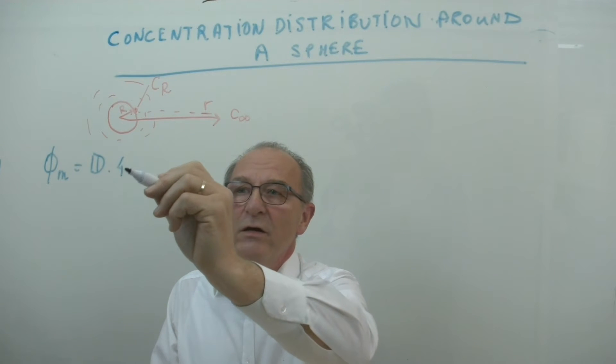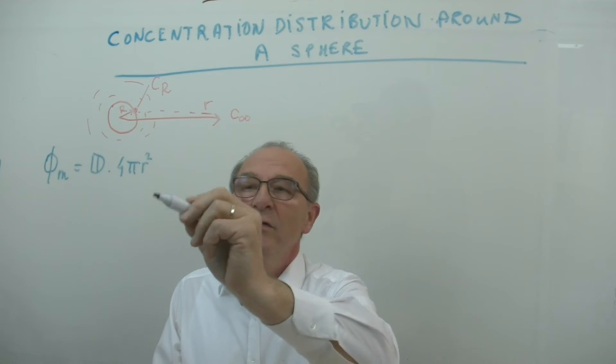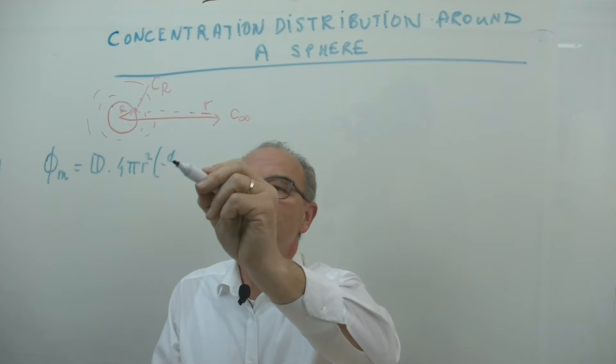the surface area of the sphere, 4 pi R squared, multiplied by the concentration gradient.